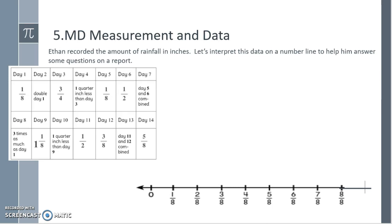On day one the rainfall amount was one eighth so I'll put a dot above one eighth. On day two it's double day one, so we need two copies of one eighth, so two eighths. On day three we need three fourths. We know that we can combine two eighths together to create a fourth, so here would be one fourth, two fourths, three fourths at six eighths.